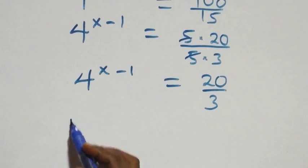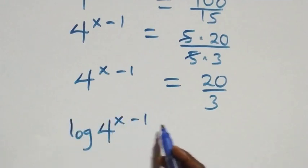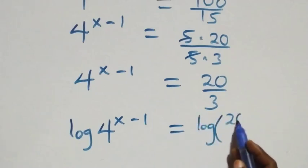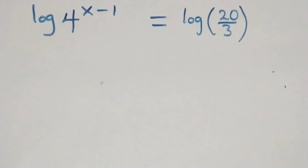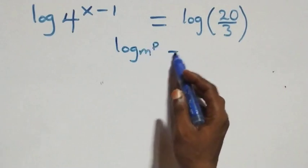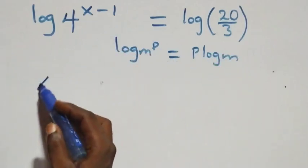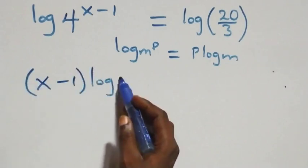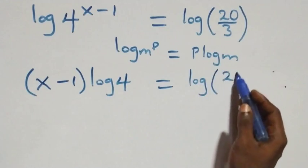From here we take the log on both sides, so we have log of 4 raised to power x minus 1 equals log of 20 over 3. We apply the power rule of logarithms: log of m raised to power p is the same thing as p times log m. The power here is x minus 1, so what we have becomes x minus 1 times log 4 equals log of 20 over 3.